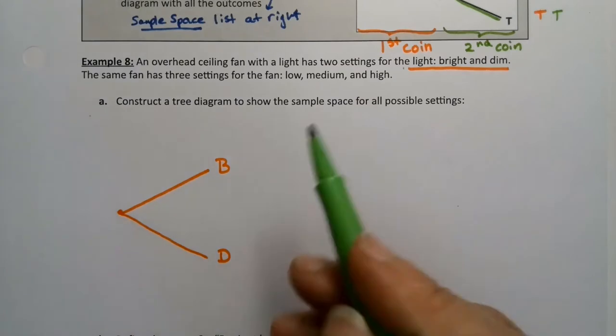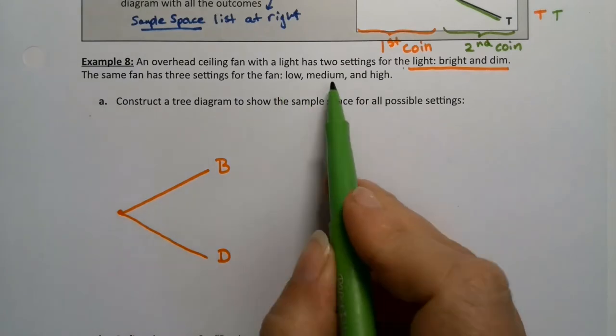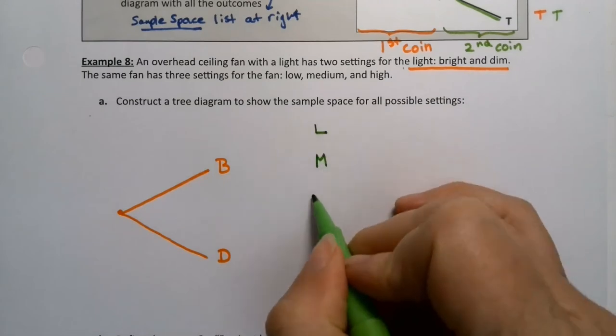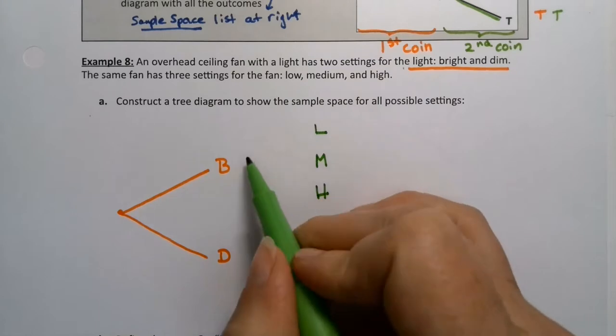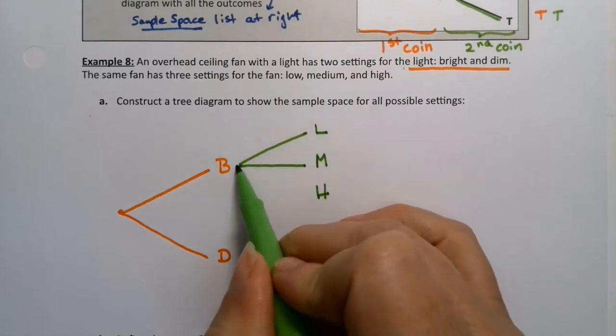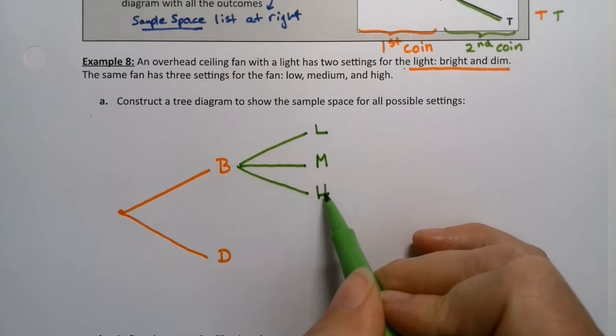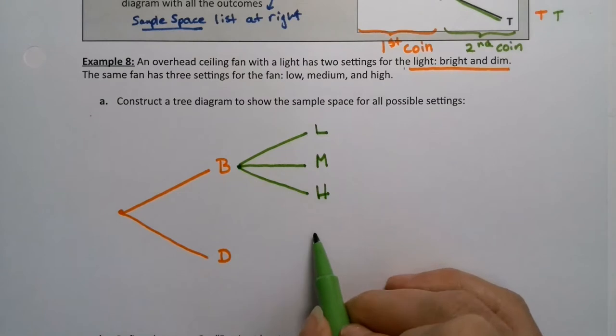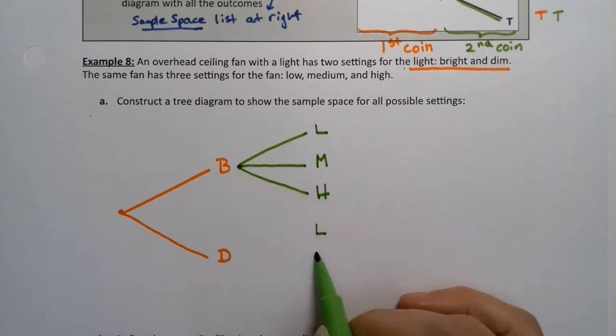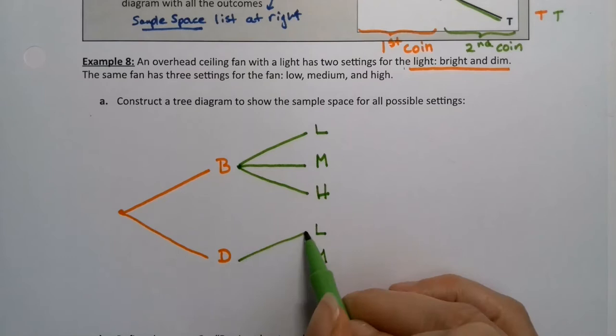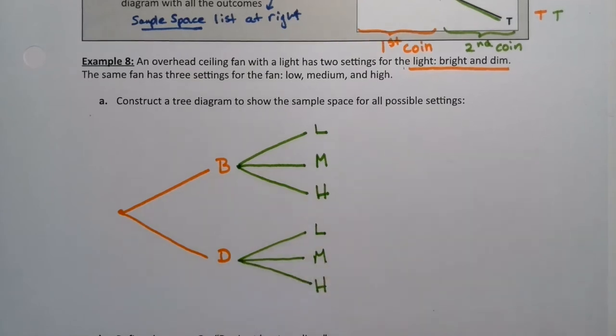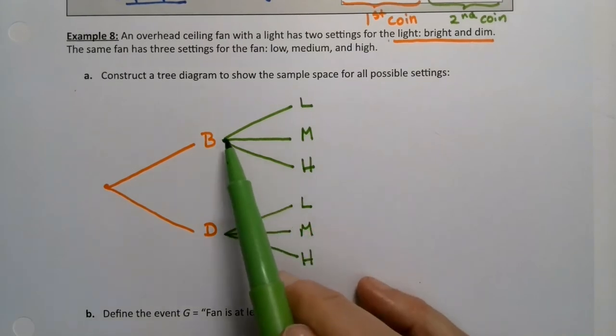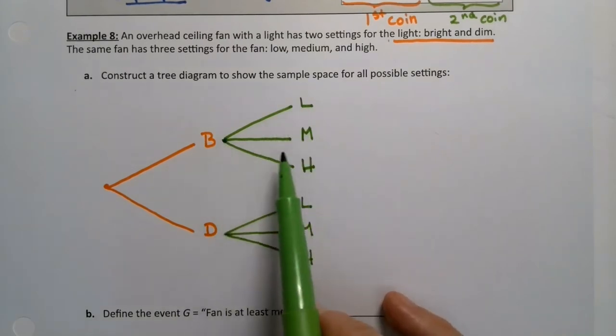Then for the next portion, for the fan: low, medium, high. L, M, H. So I'm gonna do L, M, H because that could happen after you chose bright. And again, I write them vertically. Then I make the lines that connect back to the B. And then I'll do it again. L, M, H. And then I'll draw the lines. You can see it's not always V's. In this case, it's kind of a fan shape. You have to draw a line from where the B is, well, a point near the V, all the way out to each of those three.